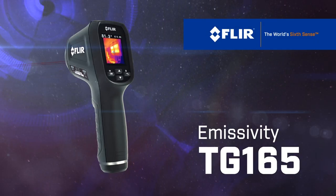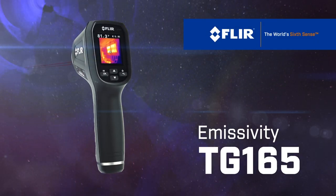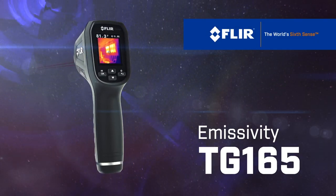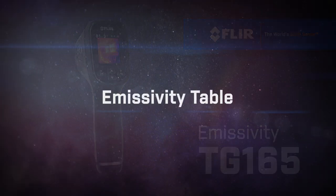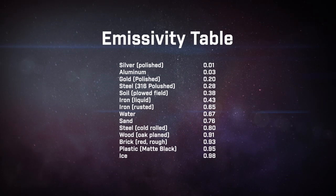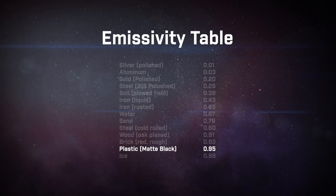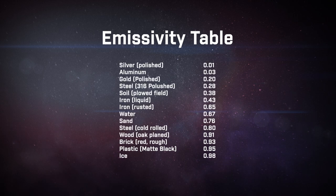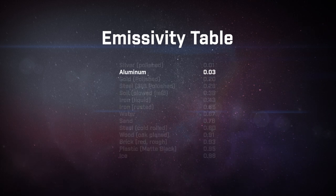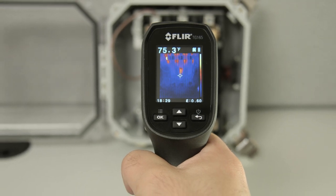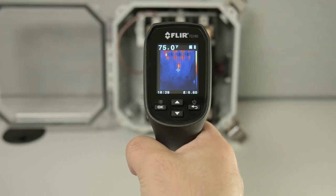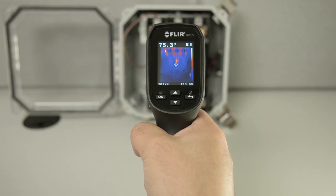Emissivity is essentially a measurement for how much a surface reflects or radiates heat. For example, a flat or matte black surface usually has an emissivity of 0.95, and a shiny, more reflective surface has an emissivity of 0.03. For more accurate measurements, you'll need to adjust for emissivity.